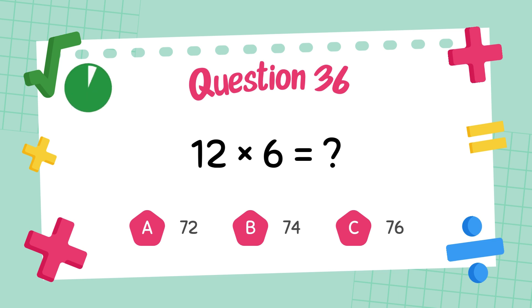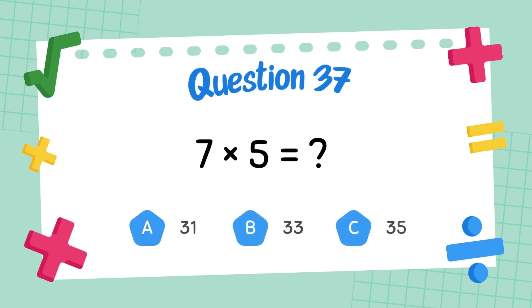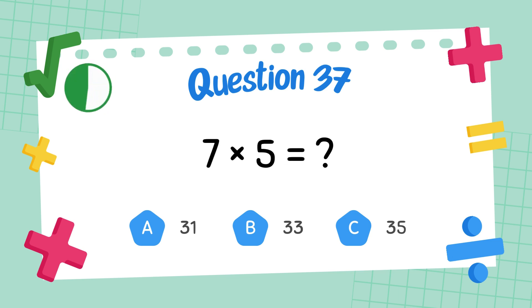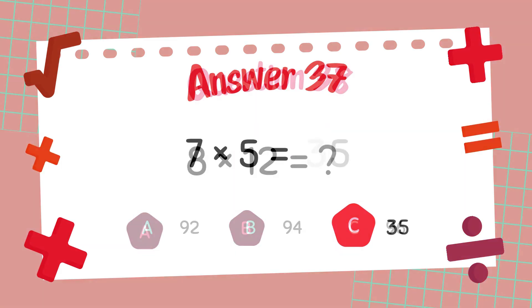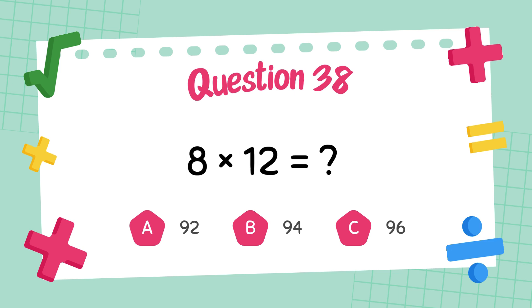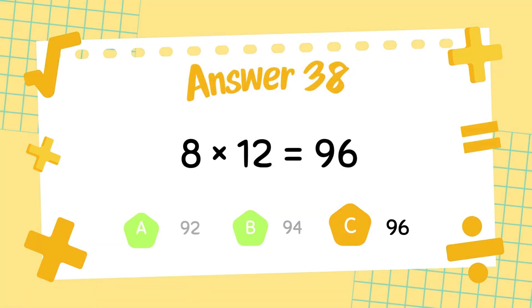What is 8 times 12? The answer is 72. What is 7 times 5? The answer is 35. What is 8 times 12? The answer is 96.